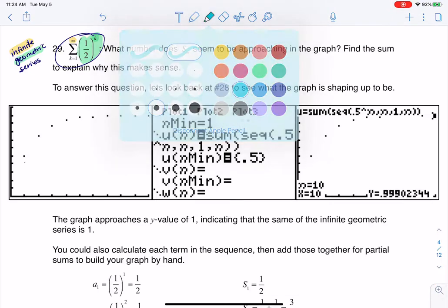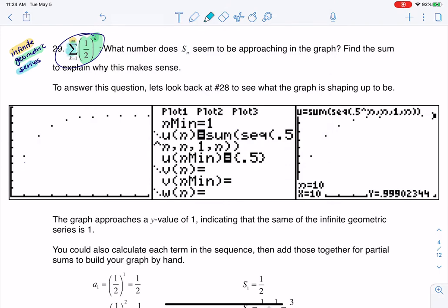And then you heard me reference series, and that's because I'm adding stuff, right? If I just had, hey, one half to the K here, and we listed out terms like one half, one fourth, one eighth, that is a geometric sequence. But when I add those terms, like one half, plus one fourth, plus one eighth, so on and so forth, that is a geometric series.